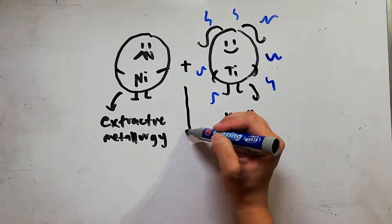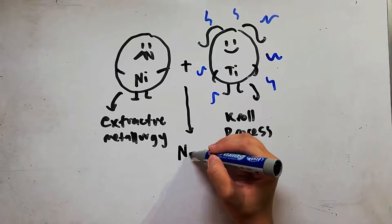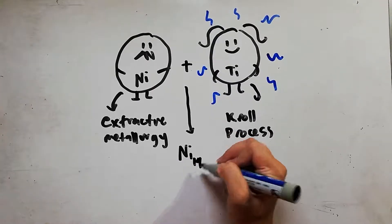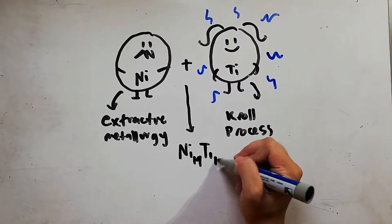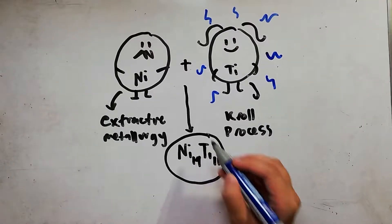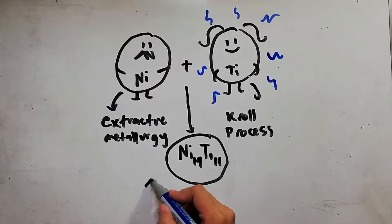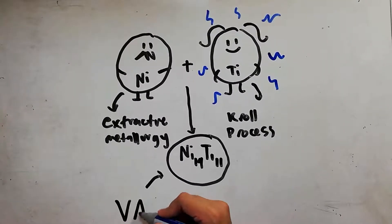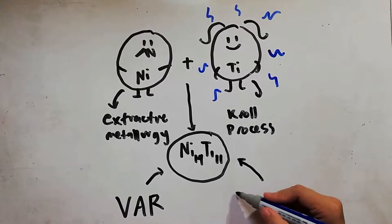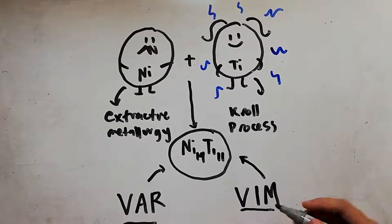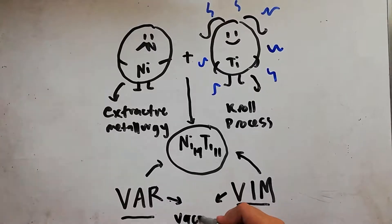And yeah, there's me, their one and only daughter. Mom was very reactive, so I had to be made in a very special condition, in a vacuum. I don't know which was it, but it was either by vacuum arc melting, VAR, or vacuum induction melting, VIM.